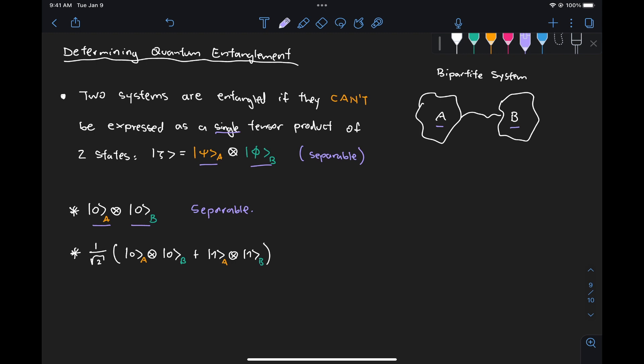Now let's take a look at this other example where we have 1 over 2 of state 0 tensor 0 plus 1 tensor 1. So in this case we can see here that we have the sum of two tensor products and what's key here is that there's really nothing we can do to this state to turn it into a single tensor product of something that just corresponds for system A and something that corresponds for system B. So that's why we say that this state is entangled.